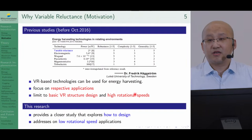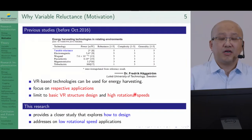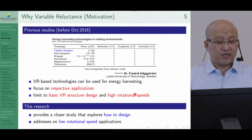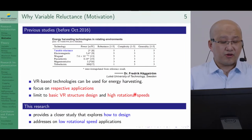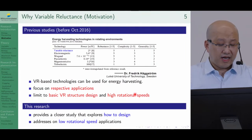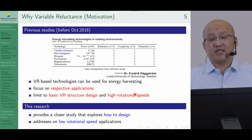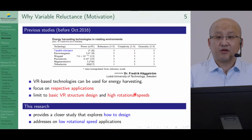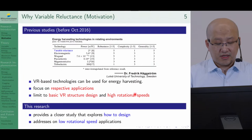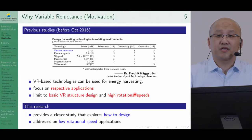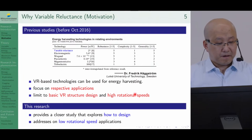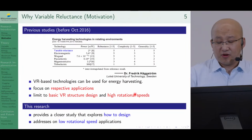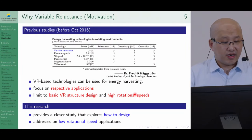Variable reluctance represents a very big research gap for rotating energy harvesting applicable to this hydraulic motor. That's why in this research, we want to give a deeper investigation to show how to design — not just what to design as in previous studies. Also, prior studies focused on high speed, whereas we address low speed. That is why variable reluctance was chosen.